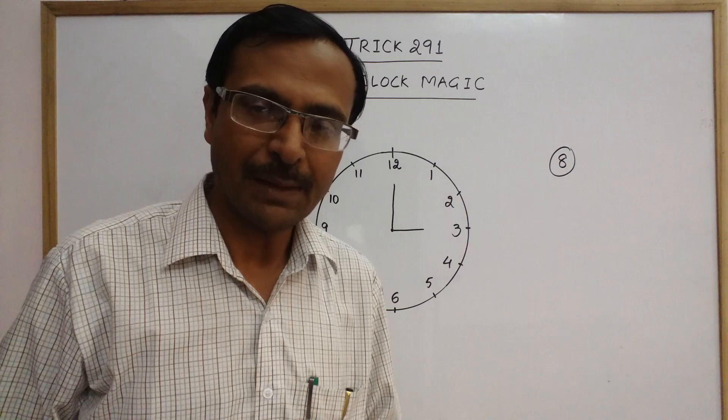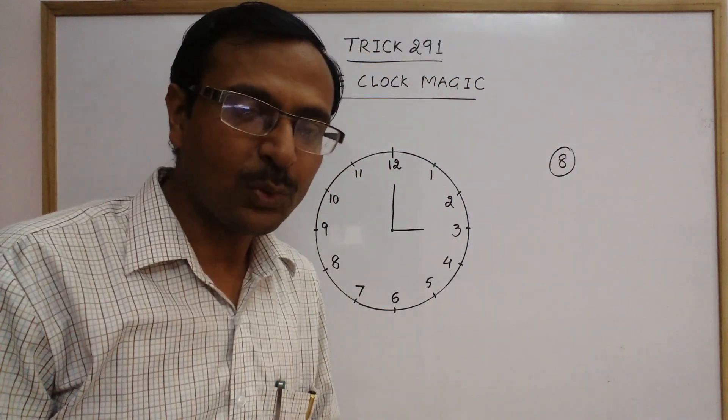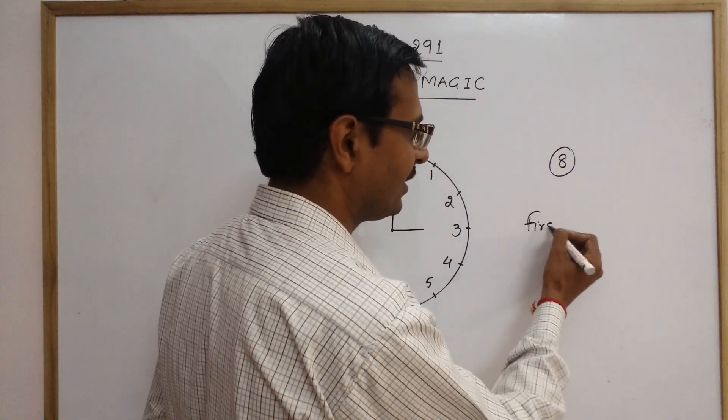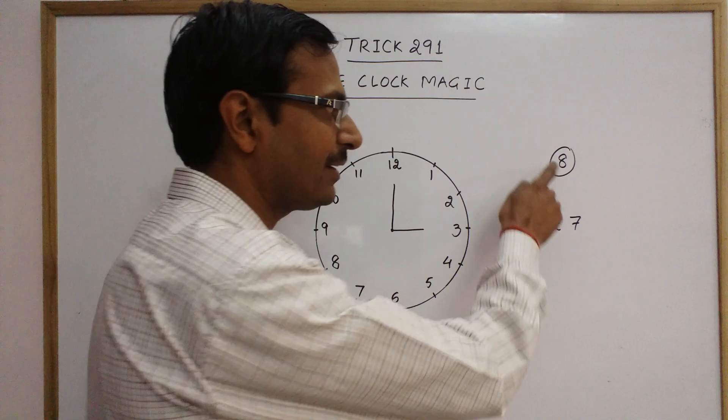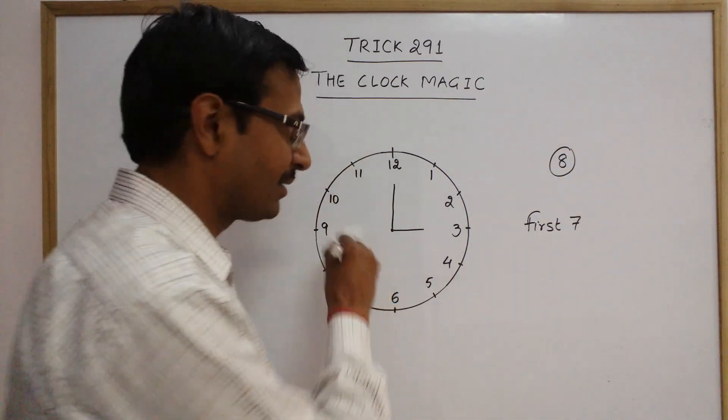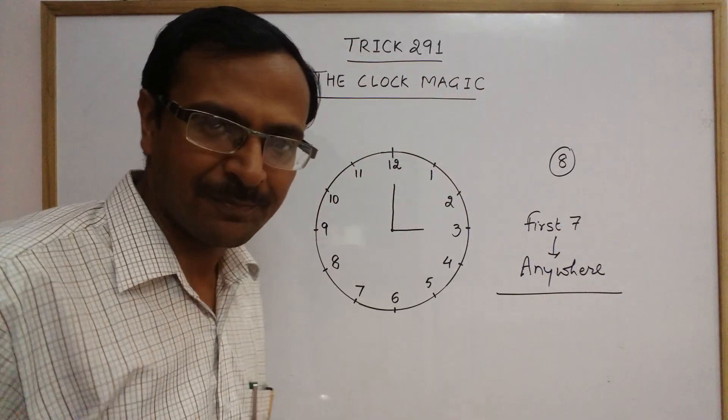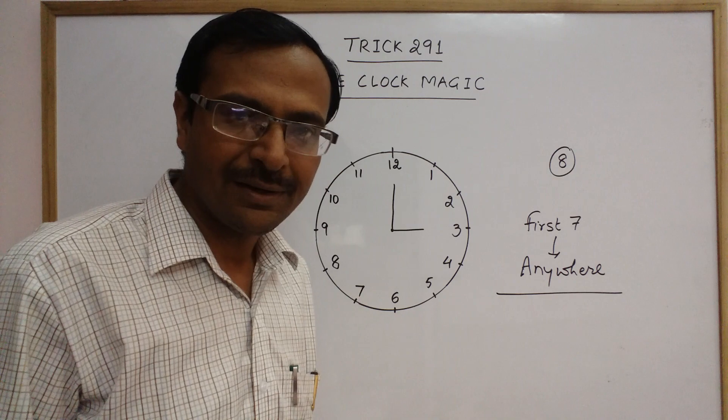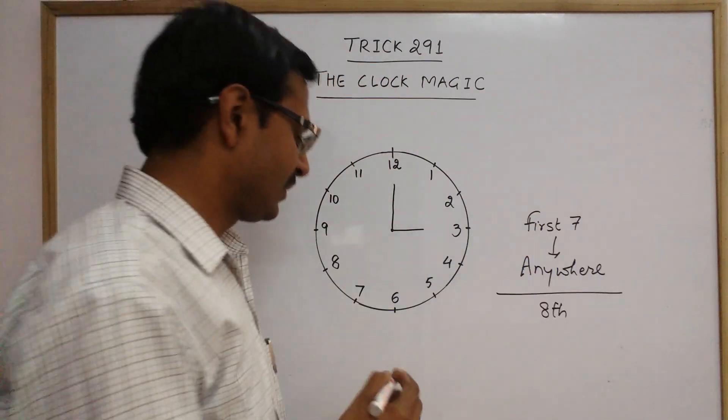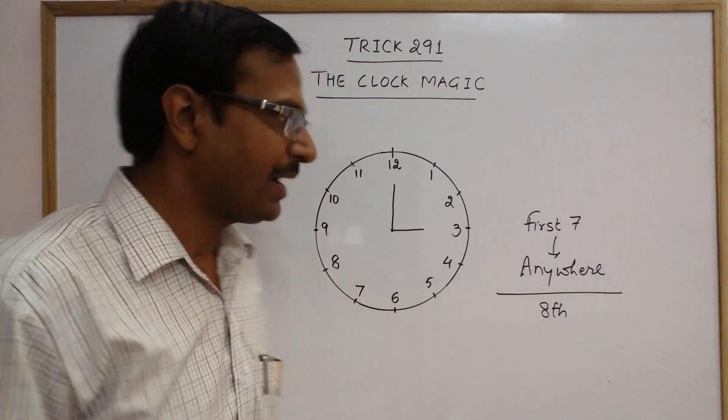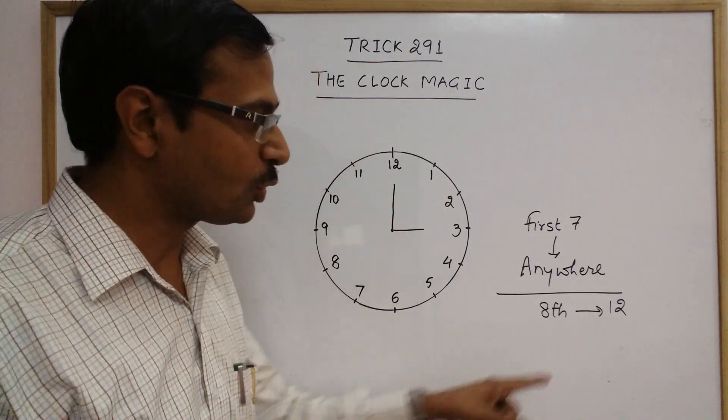So what I do is, I am just telling you the trick because you have to do it in front of your friends. Whatever number he has thought, what you do is, first seven, the ones which you are placing, you will be counting one, two, three, and he will be counting from that number. So first seven which you are placing, you can place it anywhere. You can place it anywhere, first seven. No need to follow any pattern. And eighth, the number eighth, that position which you are placing has to be on twelve. Always, the eighth position which you are placing should be on twelve. Remember, first seven anywhere and eighth on twelve.